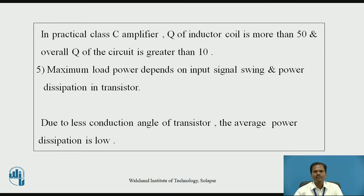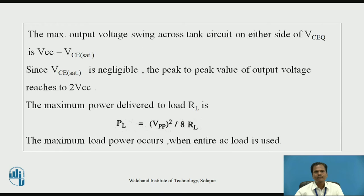In a practical Class C amplifier, the quality factor of the inductor coil is more than 50, and the overall quality factor of the circuit is greater than 10. The maximum load power depends upon the input signal swing and power dissipation in the transistor. Due to the less conduction angle of the transistor — that is, less than 180 degrees — the average power dissipation of the power transistor is very low.